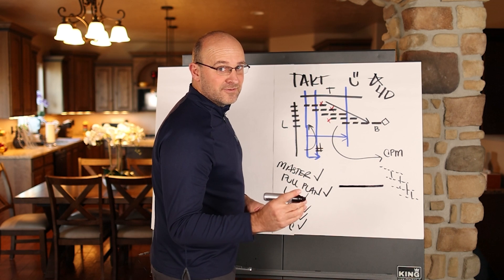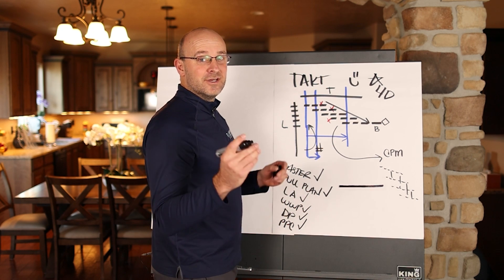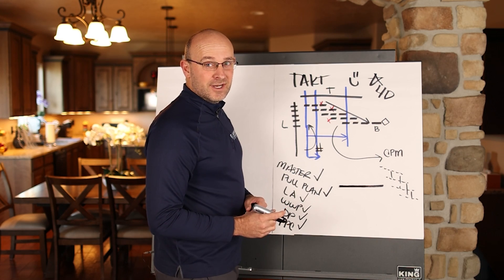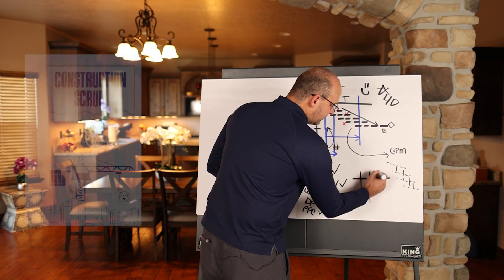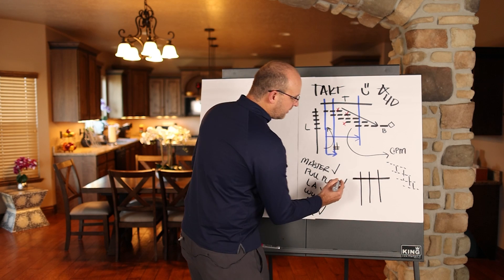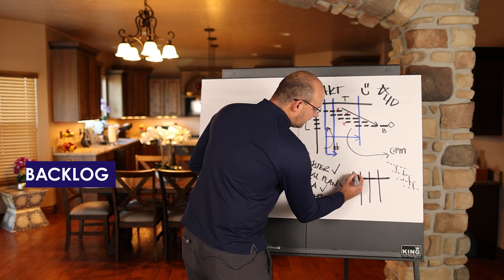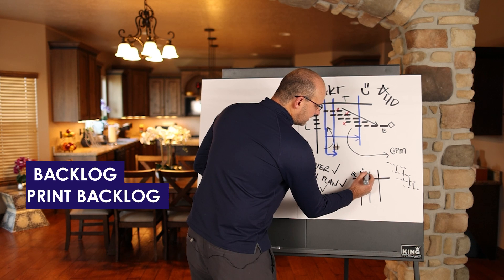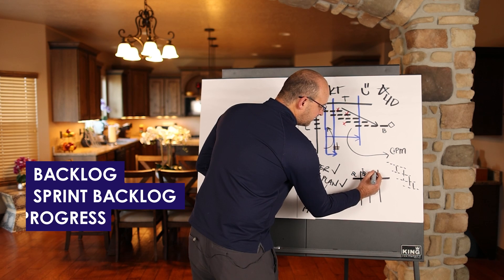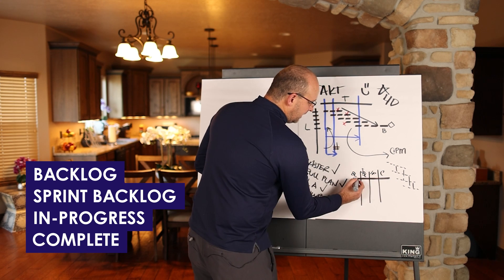And so Scrum, I'm wildly simplifying this. If you want more information, talk to Felipe Engineer. He has great training and a great book called Construction Scrum. You basically have a board, in my opinion, with at least four columns. This is called backlog or work items to do. This is called your sprint backlog. This is in progress, and this is complete.